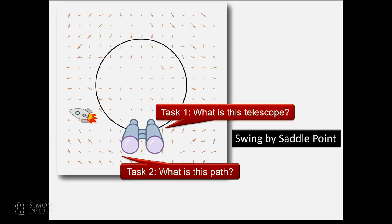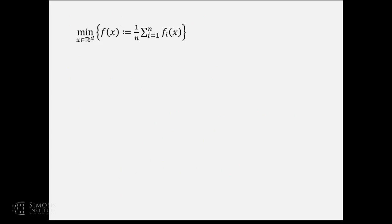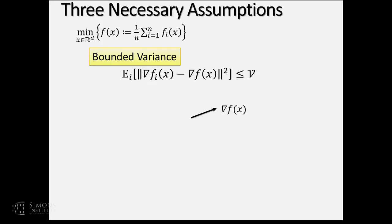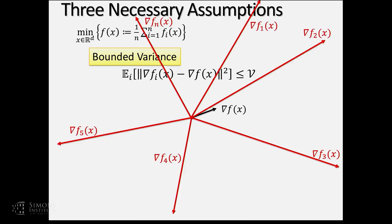I'm ready to talk about the three necessary assumptions. The first assumption is that the variance of the stochastic gradients is bounded: if you take a random i, the expectation of the gradient fi minus the true gradient f is bounded. This is necessary because if variance is infinite, you must put step length to zero, giving poor convergence rate. This is also assumed by all variants of stochastic gradient descent.